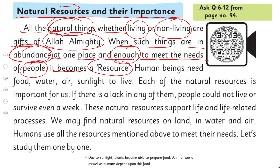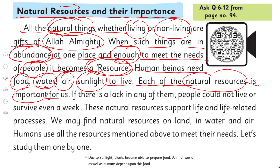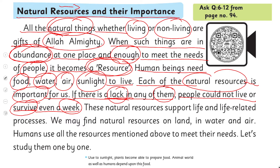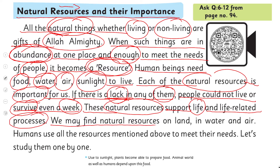'Human beings need food, water, air, and sunlight to live. Each of the natural resources is important for us — if there is a lack in any of them, people could not live or survive even a week.' A lack means if any of these things become scarce, living things and human beings cannot survive. These natural resources support life and life-related processes. We may find natural resources on land, in water, and in air.